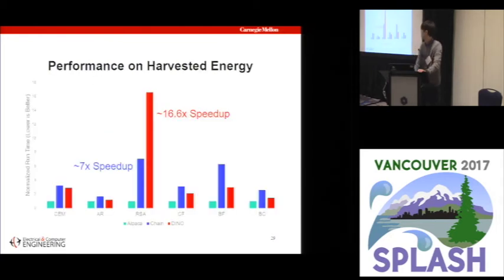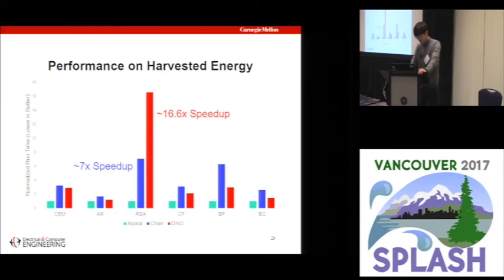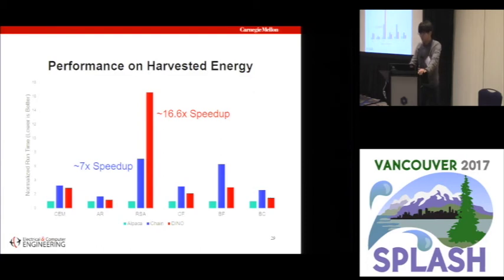These are our performance results measured on real harvested energy. On the x-axis are the six application benchmarks. Each has three bars: green for ALPACA's runtime, blue for Chain, and red for Dino, all normalized to ALPACA's runtime — lower is better. ALPACA is the fastest across all benchmarks without exception. In some cases it is more than seven times faster than Chain and more than 16 times faster than Dino, and the advantage can grow much larger.